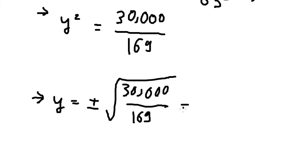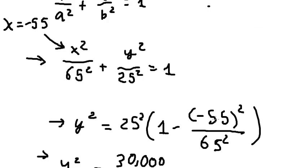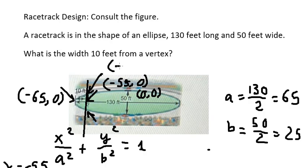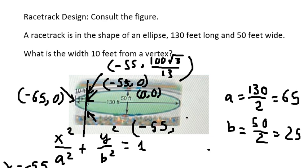So we have y equals plus or minus 100 multiplied by the square root of 3 over 13. So this point is at (-55, 100√3/13), and this location is at (-55, -100√3/13).